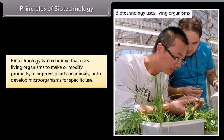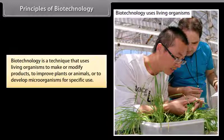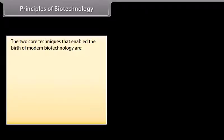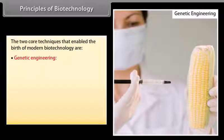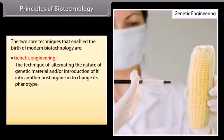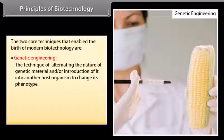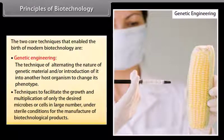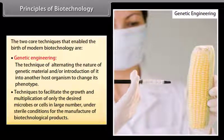Biotechnology is a technique that uses living organisms to make or modify products to improve plants or animals or to develop microorganisms for a specific use. The two core techniques that enable the birth of modern biotechnology are genetic engineering — the technique of altering the nature of genetic material and/or introduction of it into another host organism to change its phenotype — and techniques to facilitate growth and multiplication of only desired microbes or cells in large numbers under sterile conditions for manufacture of biotechnological products.